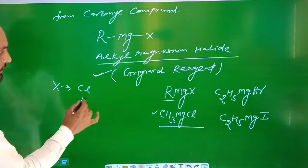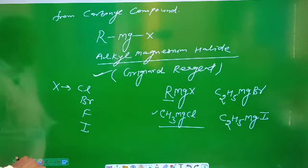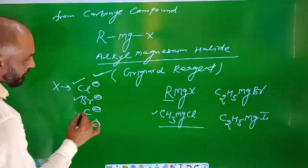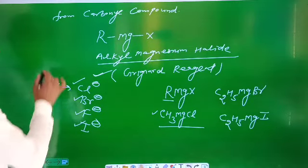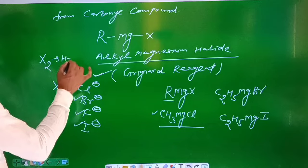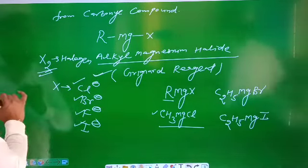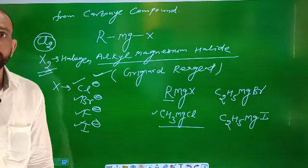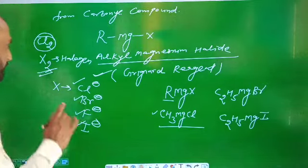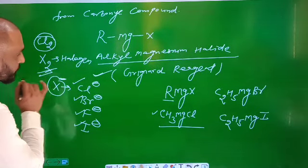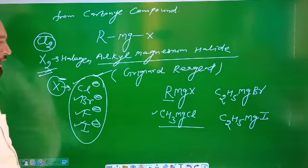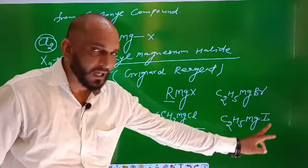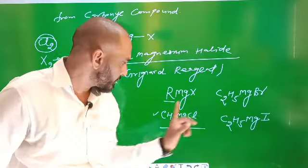X can be Cl, Br, F, or I. If all have a negative charge, then they are called chloride, bromide, fluoride, and iodide respectively. X₂ refers to the halogen molecule — for example, Cl₂ is chlorine, Br₂ is bromine, F₂ is fluorine, and I₂ is iodine. But if X is present as X⁻, the common name is halide. So, methyl magnesium iodide is also a Grignard reagent.